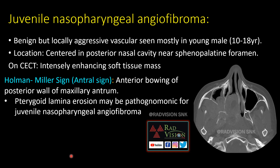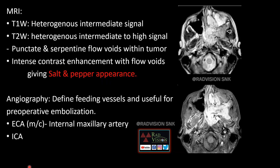Juvenile nasopharyngeal angiofibroma is seen in young males, centered in the posterior nasal cavity near the sphenopalatine foramen. On CECT, it is seen as an intensely enhancing soft tissue mass. The Holman-Miller sign can be seen, which is anterior bowing of the posterior wall of the maxillary sinus. On MRI, heterogeneous intermediate signal intensity is seen on both T1 and T2. Punctate and serpentine flow voids are seen within the tumor. Intense post-contrast enhancement with flow voids gives the salt-and-pepper appearance.